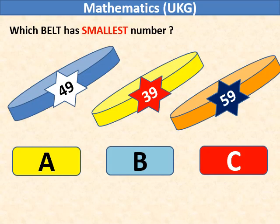Which belt has smallest number? Belt A has 49, belt B has 39, belt C has 59. So belt B has smallest number 39.